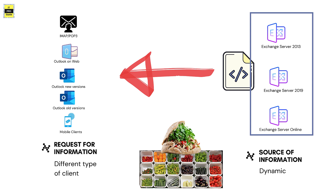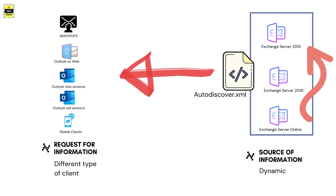If you look at the clients, there are different types. Even within Outlook, different versions connect to Exchange server differently — Outlook 2007 connects differently than Outlook 2013. Mobile clients connect through ActiveSync, while Outlook connects through MAPI over HTTP or RPC. The way clients connect to Exchange server depends on the type of client, the version of the application, and the Exchange server side configuration. The source of information is dynamic and requests come from different types of clients.